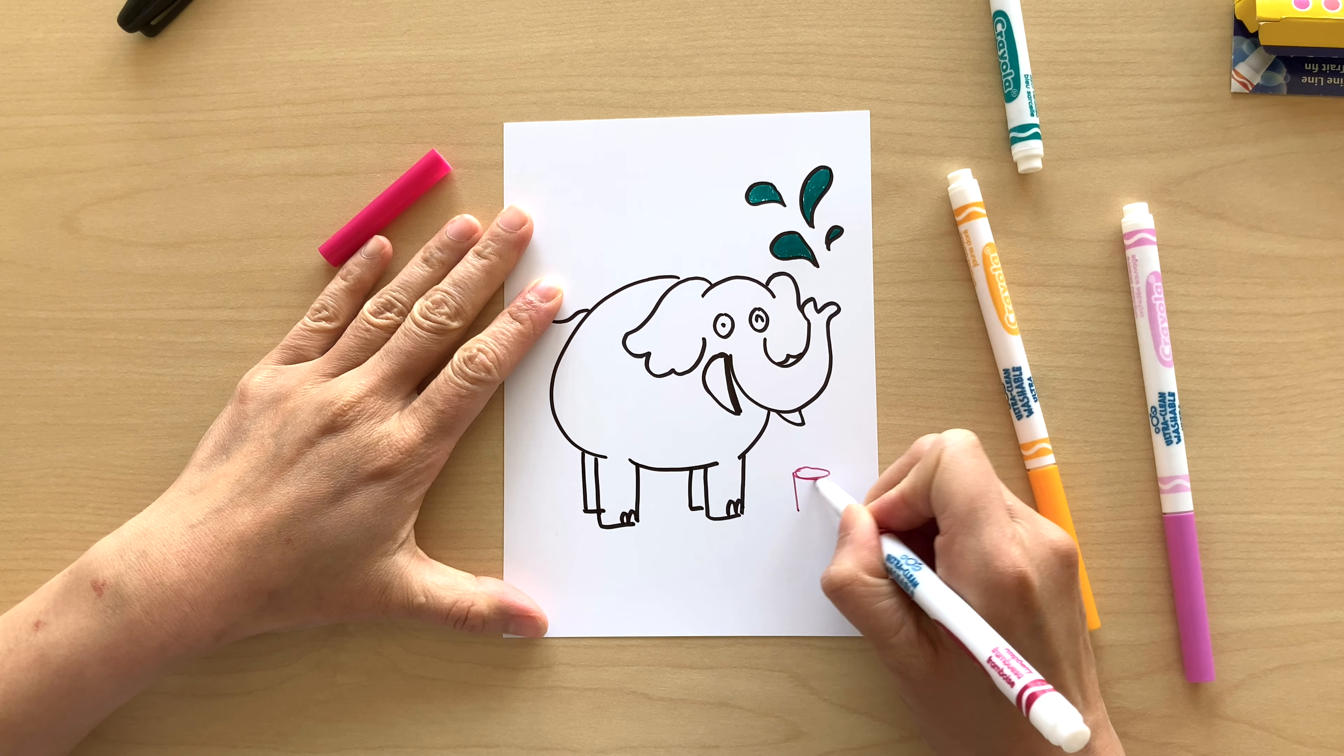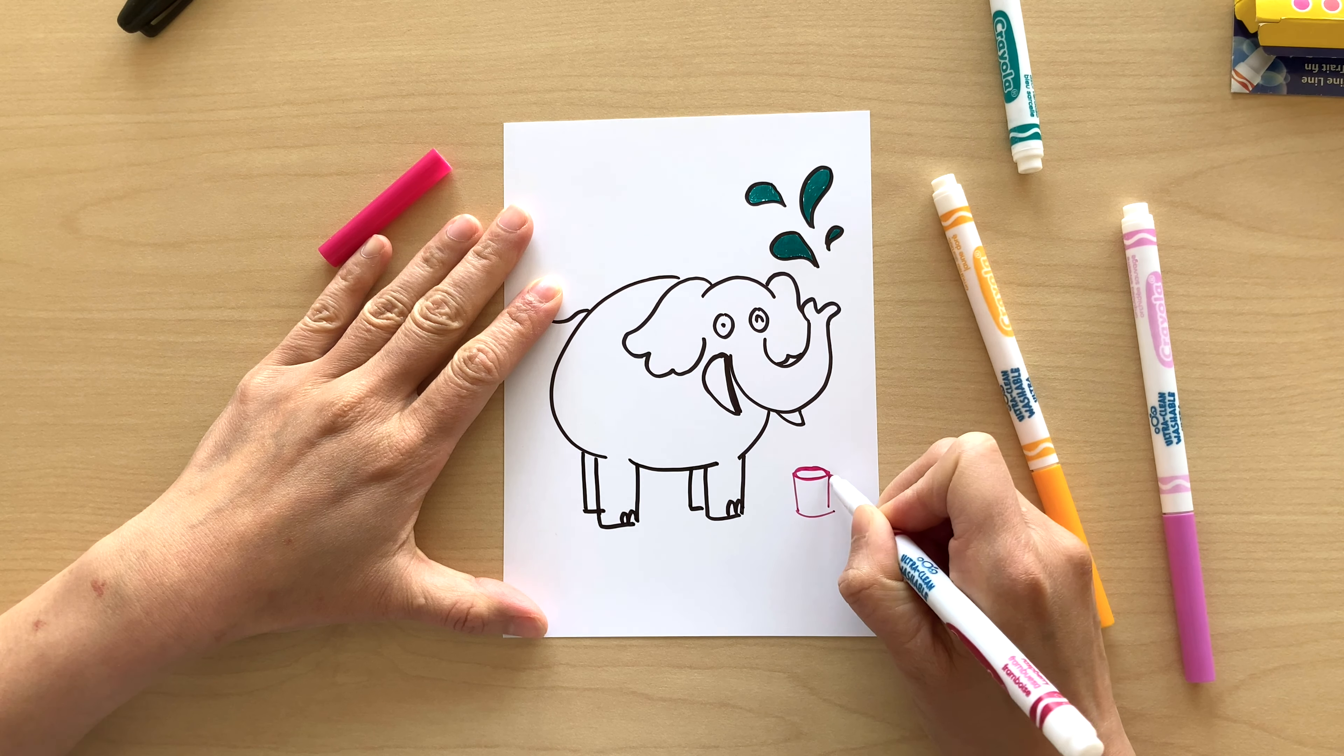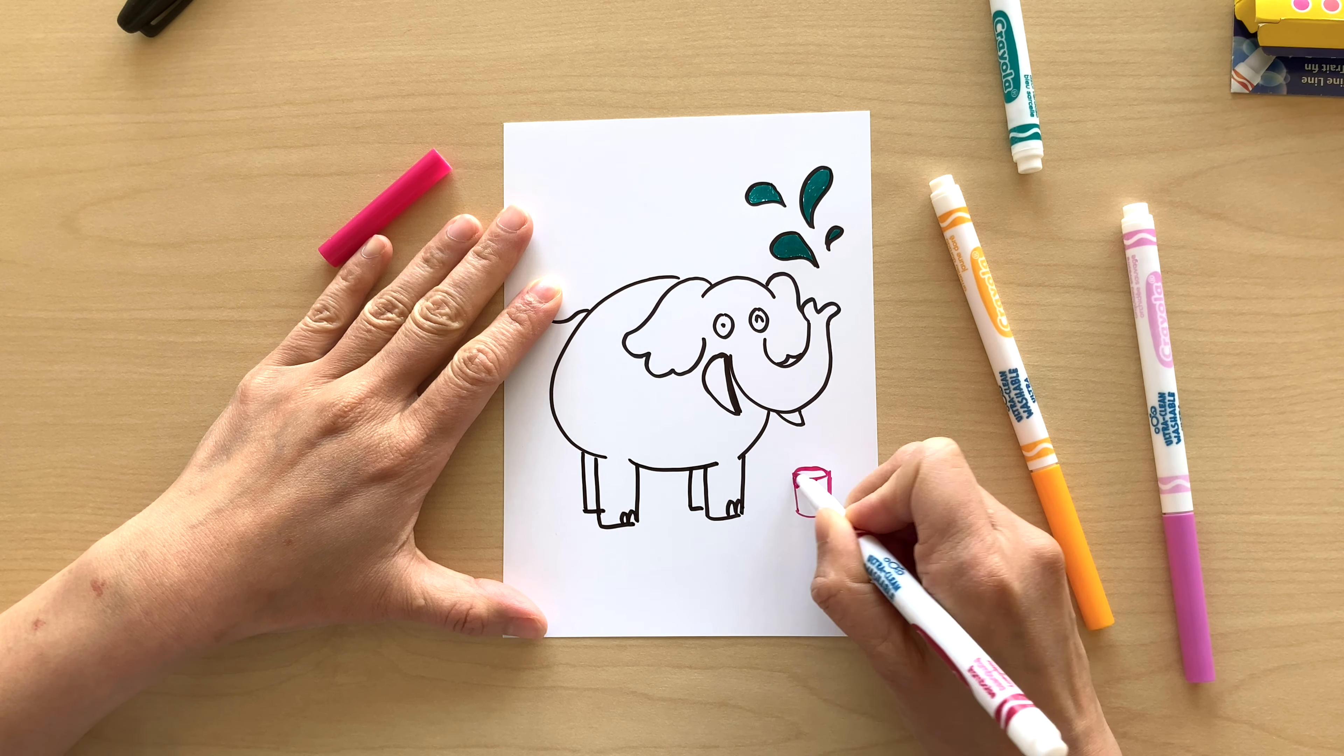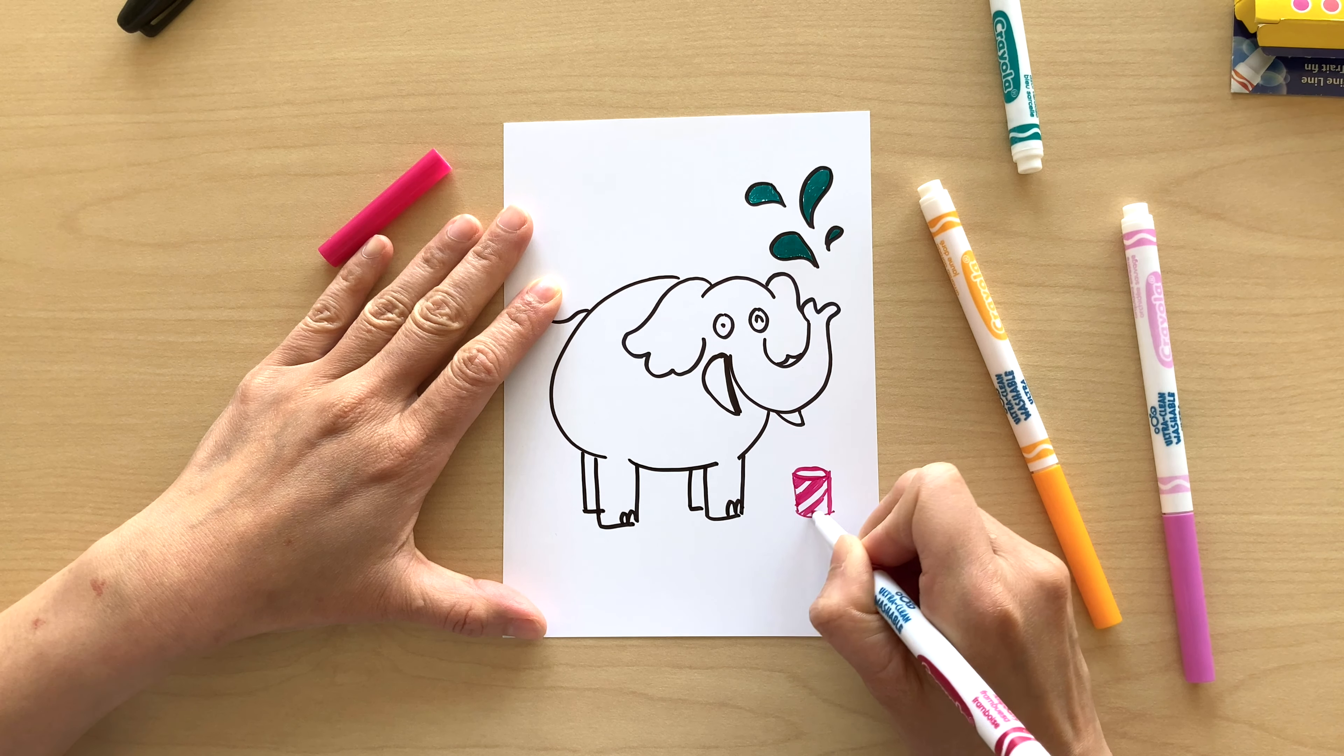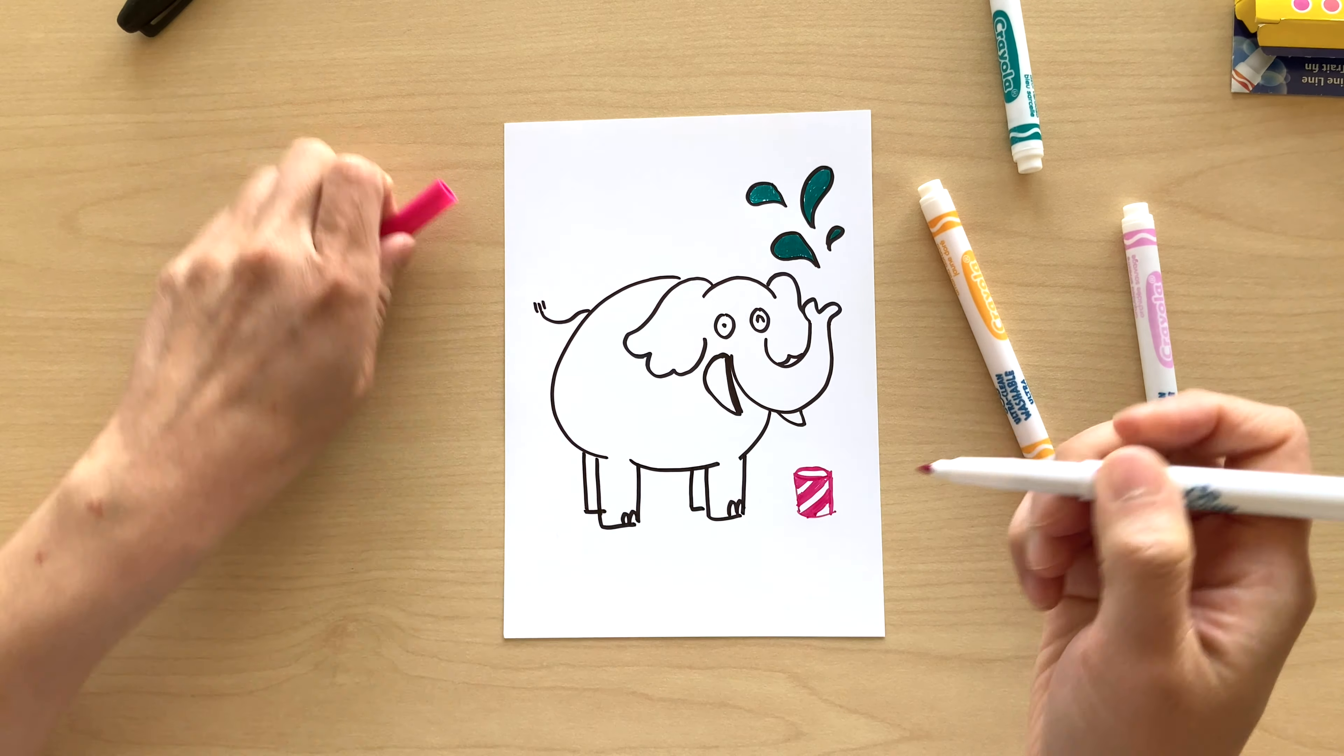Here I'm just gonna draw a tiny pail on the floor to kind of show where the water is coming from. The elephant is playing with a bucket of water, and for that bucket I'm gonna add some stripes to it to make it look interesting and a little bit different, a little bit more fun. Of course, you can have a bucket, or you can have a pond or a lake that your elephant can be drawing water from.